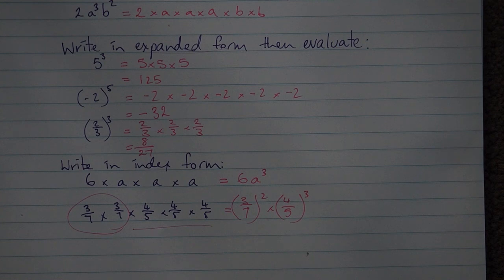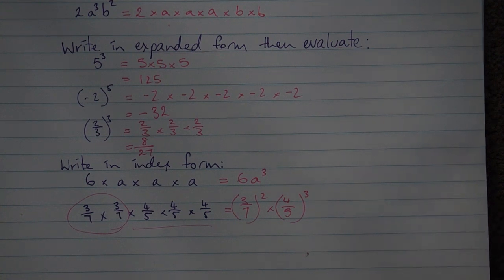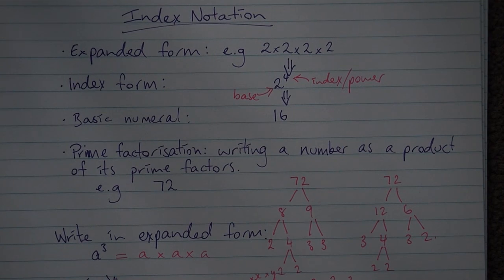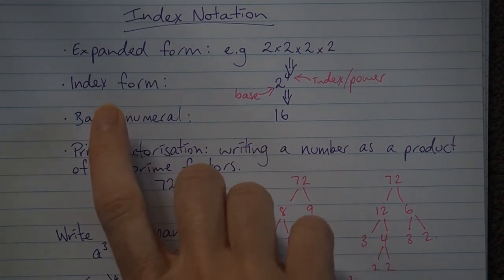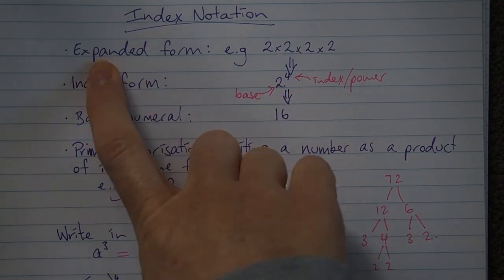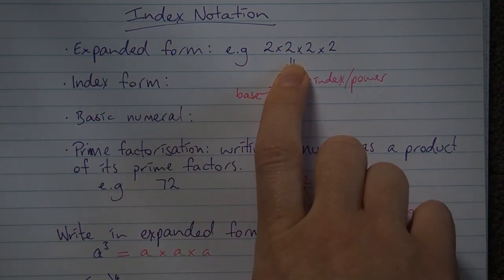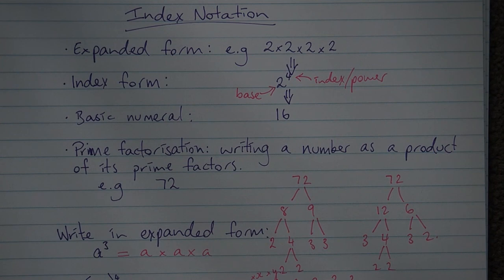To summarize index notation: read questions carefully about the required format. Basic numeral means evaluate it — turn it into a number. Index form means write it as a power. Expanded form means you need multiplication symbols between your terms. Give this a like if it was helpful, don't forget to subscribe to get notified when new videos are uploaded, and comment below if there's anything else you'd like covered.